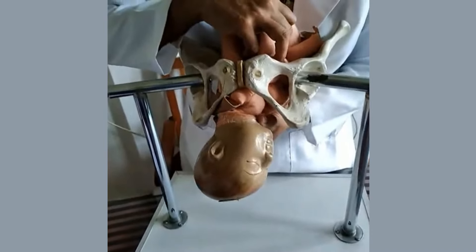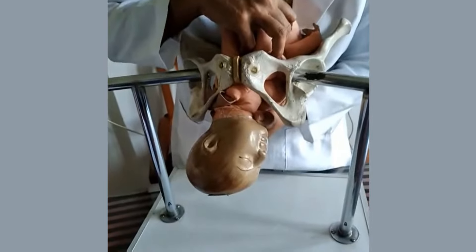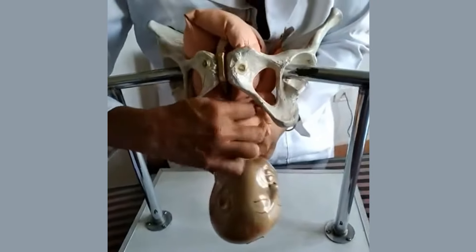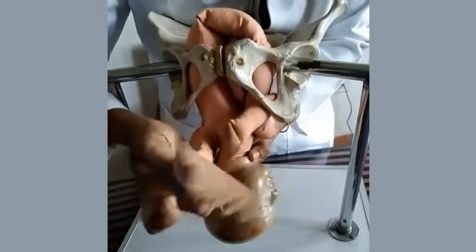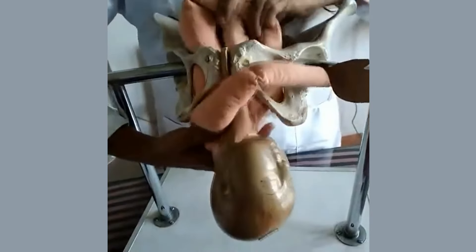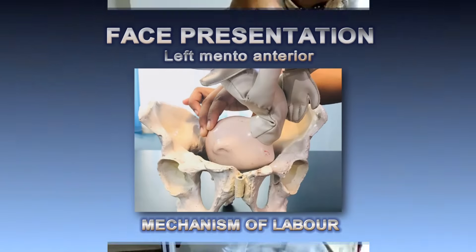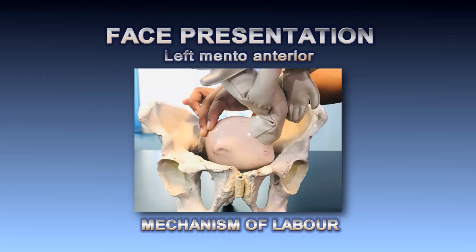External rotation of the head also takes place towards the left side. Now the body is in the same alignment. The anterior shoulder escapes under the symphysis pubis, the posterior shoulder sweeps the perineum, and the whole body is delivered by lateral flexion towards the mother's abdomen. This concludes the mechanism of labor in left mento-anterior. In the next class we will meet with another episode of a midwifery topic — take care, bye bye.